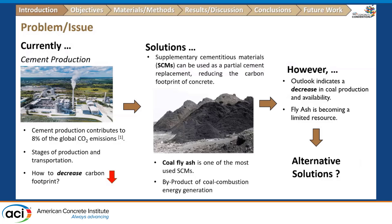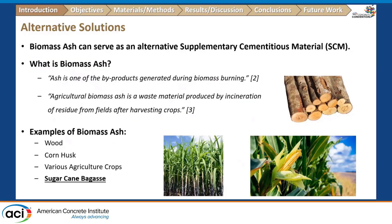The most common SCM we use is coal fly ash, a byproduct generated when we combust coal for energy. However, looking toward a greener future, the availability of coal fly ash is decreasing, so we do need alternative solutions. These include biomass ash, which can be an alternative SCM — an ash produced from the combustion of biomass waste for energy, coming from the agriculture, paper, or lumber sectors.